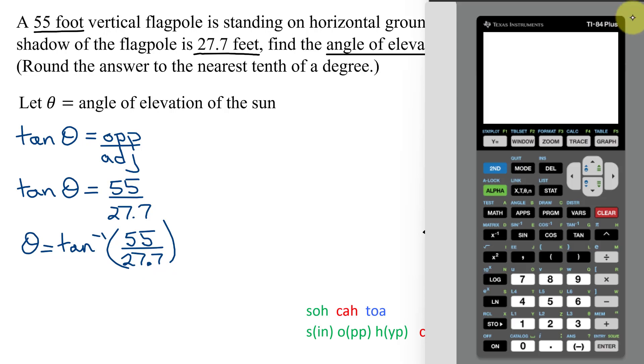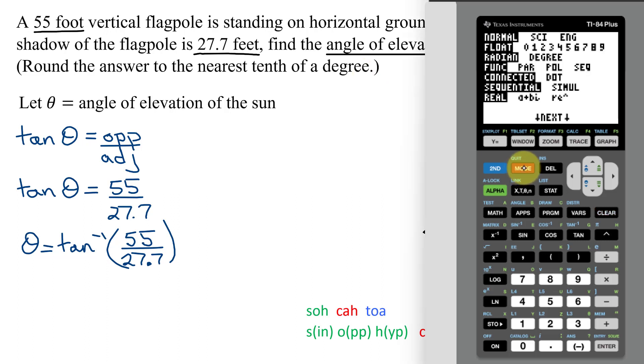Here is my calculator. It's a TI-84+. Since my answer needs to be rounded to the nearest tenth of a degree, I need to be in degrees. So looking at mode, I'm in radians, so I need to be in degrees. So I'm going to scroll down and over and then hit enter.